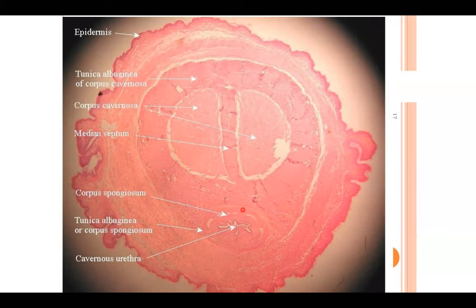While the erectile tissue will engorge with blood and make the penis larger, it won't in and of itself make it rigid unless it has a fibrous protective sheath around it to restrict it and form that rigidity, make it turgid. This structure here separates the two corpora cavernosas from each other. This is that collagen-rich layer known as the tunica albuginea. It engorges, it pushes against its boundary, and that is where the rigidity comes from.